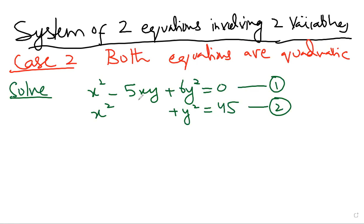When only x-squared and y-squared terms are present in both equations, we always use coefficient balancing. But in this type of case, coefficient balancing will provide no benefit, so we need to apply a different technique.